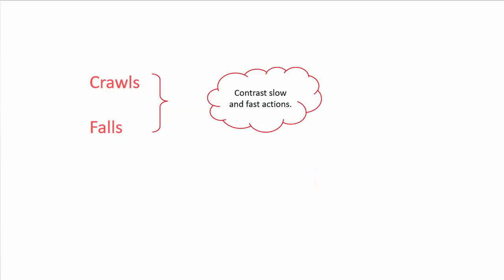There are two contrasting movements in the poem: 'crawls' and 'falls.' Crawling suggests slow movement, while 'falls' suggests quick movement. So quick and slow actions are contrasted. This contrast is also a poetic device used by the poet.